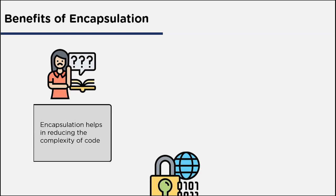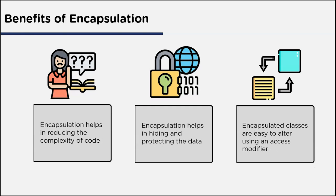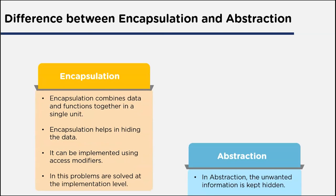The benefits of encapsulation: First, it reduces the complexity of code by hiding irrelevant data or information. Second, it helps hide and protect data by wrapping data and functions together, providing a simpler view to the user — variables of the class can be hidden from other classes. Third, encapsulated classes can easily be altered using access modifiers without changing the entire program, just the access scope of variables.